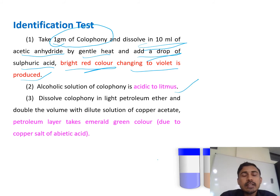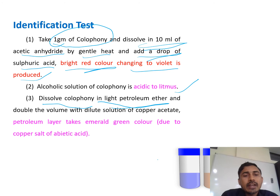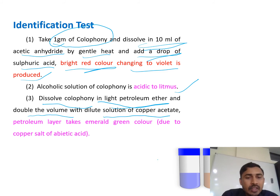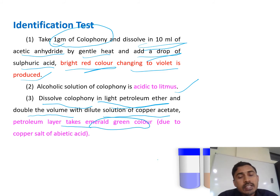The third chemical test: dissolve colophony in light petroleum ether and double the volume with a dilute solution of copper acetate. In this case, the petroleum layer will take on an emerald green color, which is due to the copper salt of abietic acid.